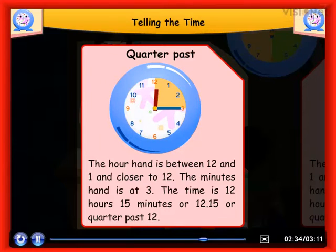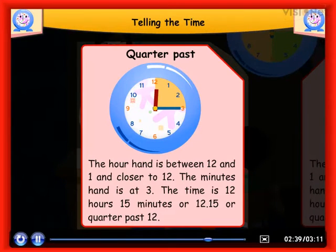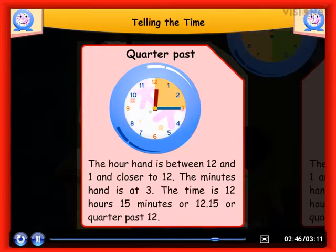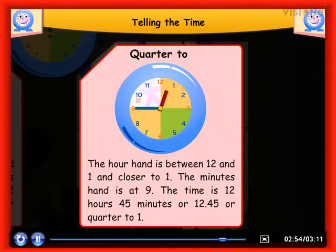Look at this clock. The hour hand is between 12 and 1 and closer to 12. The minute's hand is at 3. The time is 12 hours 15 minutes, or 12.15, or quarter past 12. The hour hand is between 12 and 1 and closer to 1.